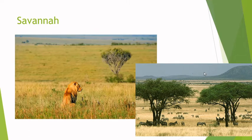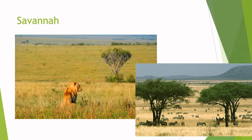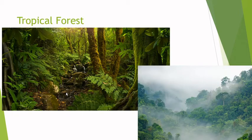Then we've got the savannah, located mainly in Africa. Mostly we've got grasses and some trees — usually acacias. It typically has one rain period where everything goes really green and the rest of the year is very dry. We find a large variety of herbivores and some carnivores.